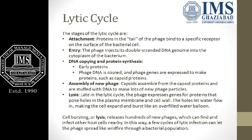When the bacteriophage settles down completely, it starts injecting its genetic material into the bacterial cell. The viral receptors may be F-pili, lipoproteins, iron transport proteins, etc. There are certain specific receptors present on the tip of the tail fibers. For example, T4 and T7 phages bind to lipopolysaccharides. In the T2 case, a sugar transporter molecule acts as the receptor.